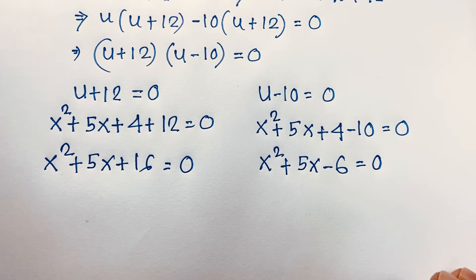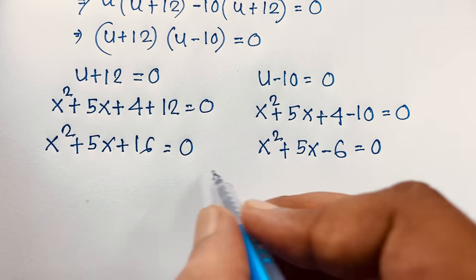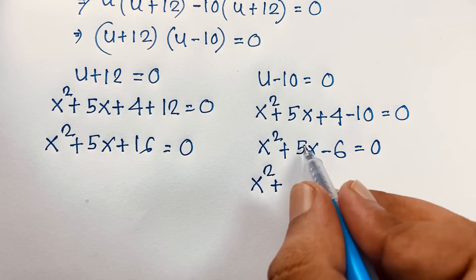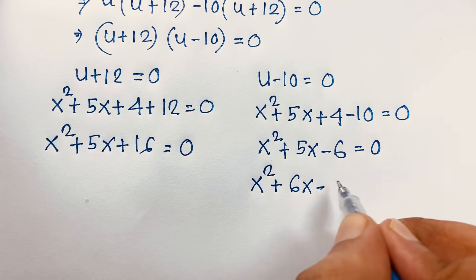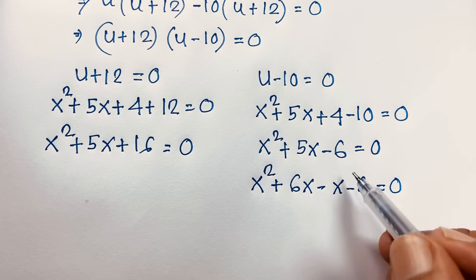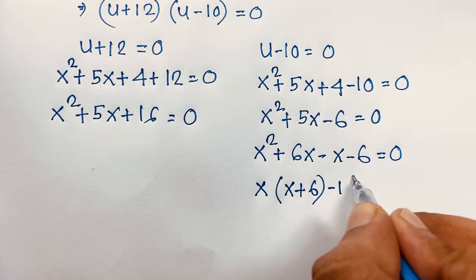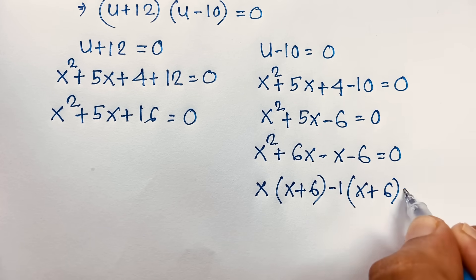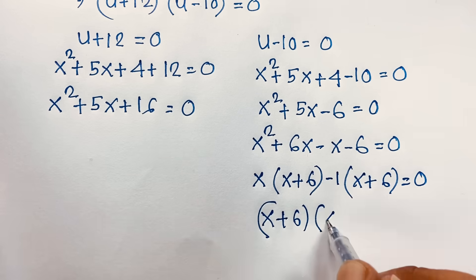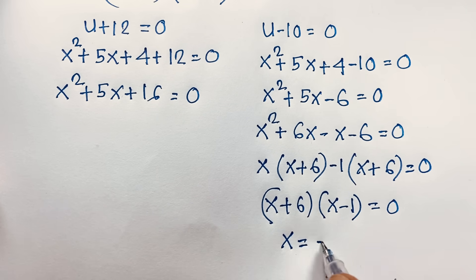Solving x² + 5x - 6 = 0 by factoring: split 5x as 6x - x, giving x² + 6x - x - 6 = 0. Taking x common from first pair: x(x + 6), and -1 common from second pair: -1(x + 6). So (x + 6)(x - 1) = 0.